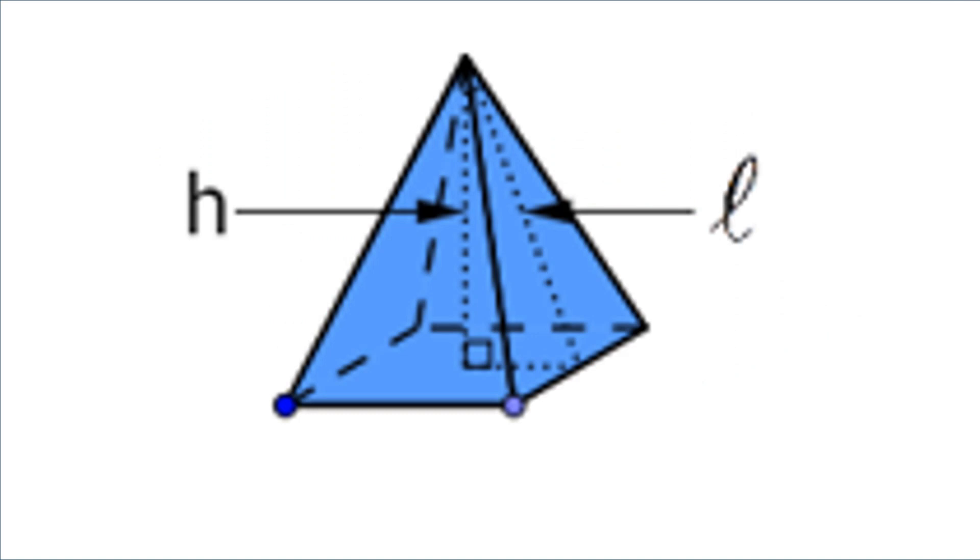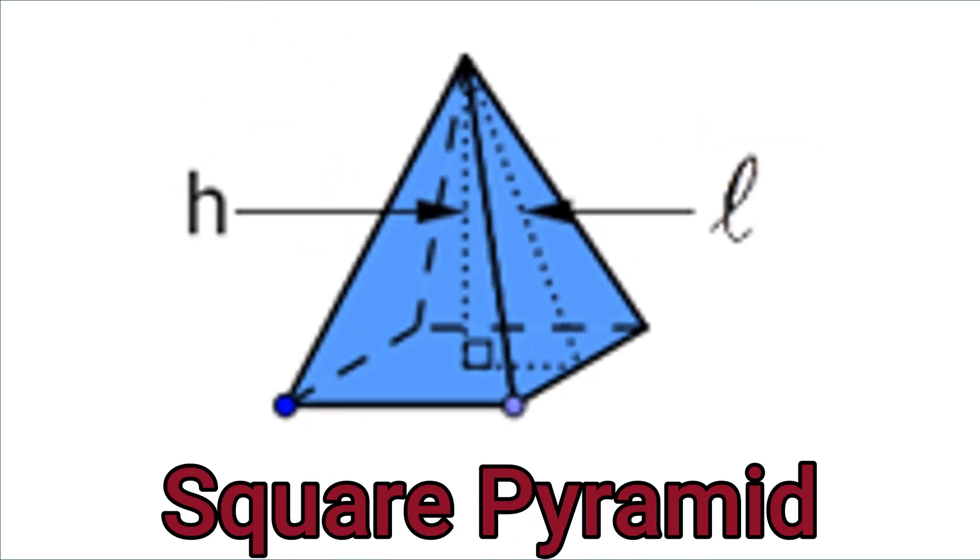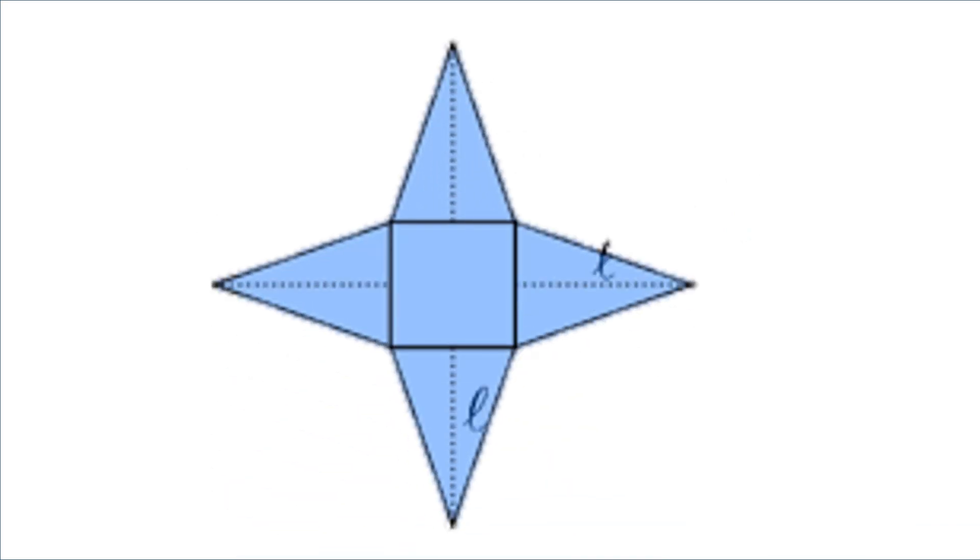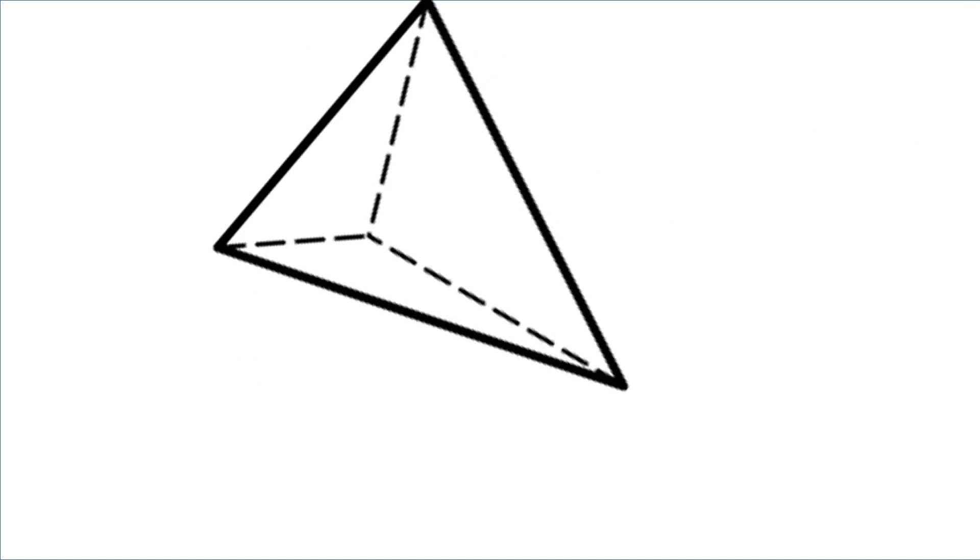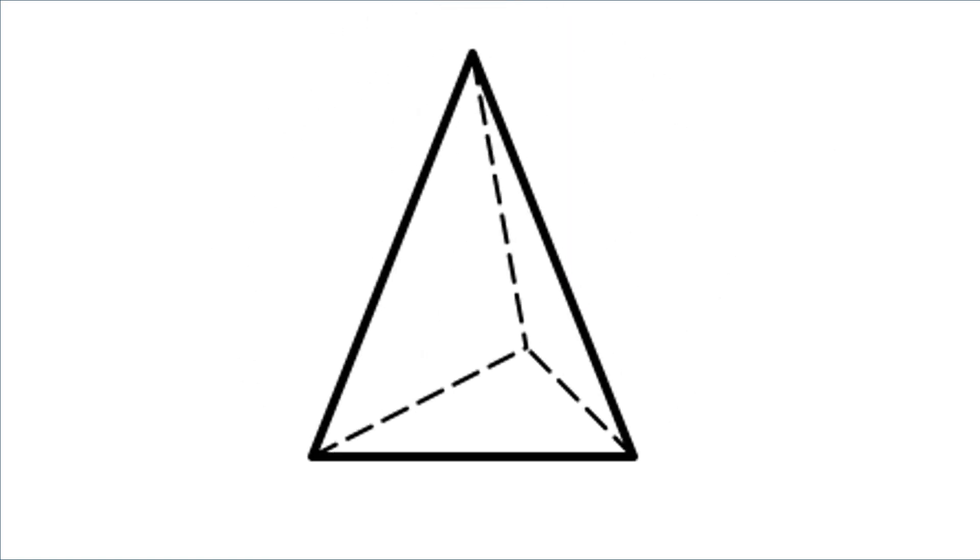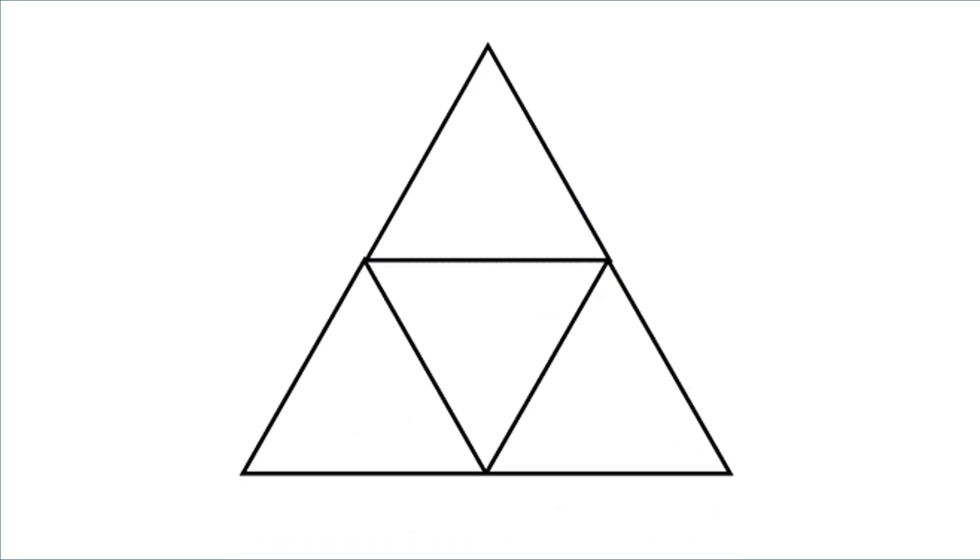Can you name what solid figure is this? All right, this is a square pyramid. This is the net of a square pyramid.